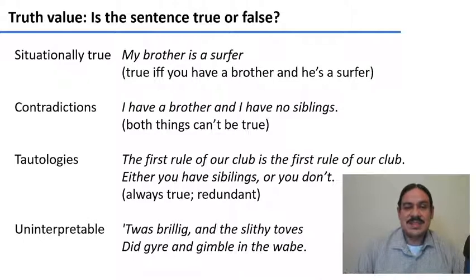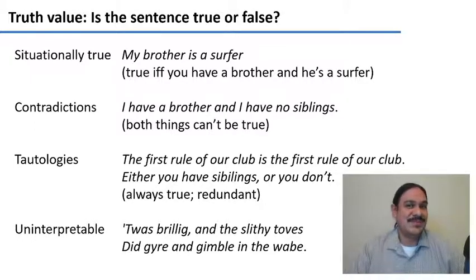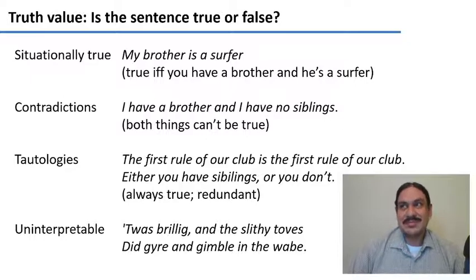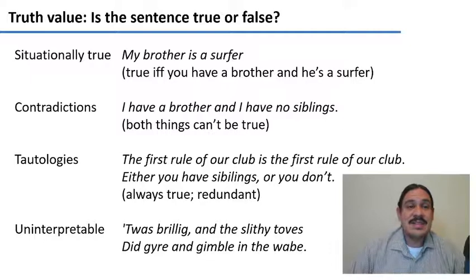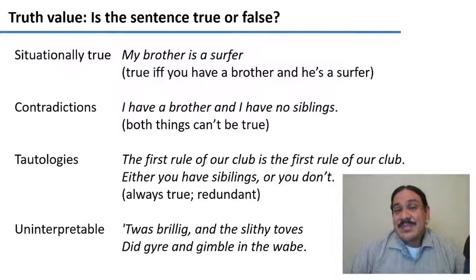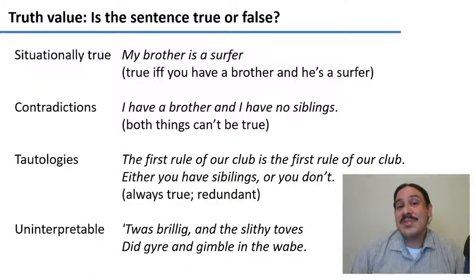We have tautologies, which are sentences that are always going to be true regardless of context. For example, 'the first rule of our club is the first rule of our club.' You may have heard tautologies described as redundant because they provide redundant information. Another example: 'either you have siblings or you don't' — that covers all possibilities, so it's always true. Finally, there are sentences for which the truth value is uninterpretable — no way to know if they're true or not. For example, from the Jabberwocky poem by Lewis Carroll, or 'colorless green ideas' — grammatically correct English but with meaningless word combinations.